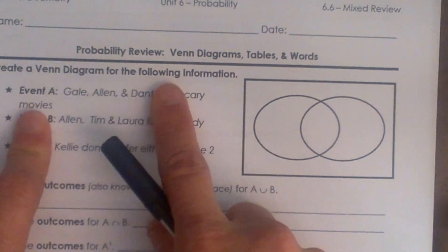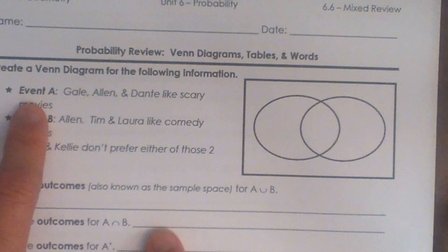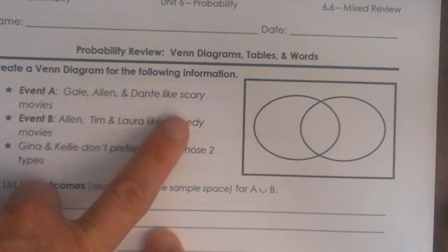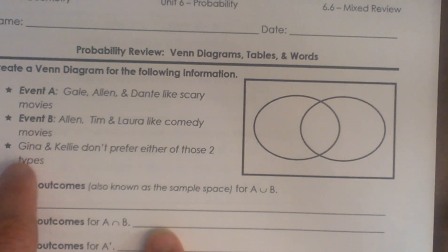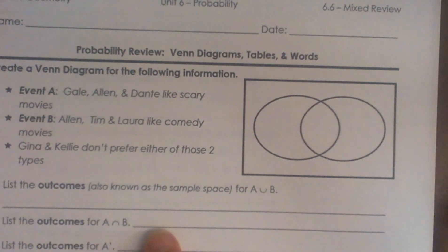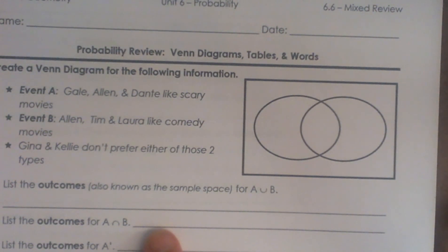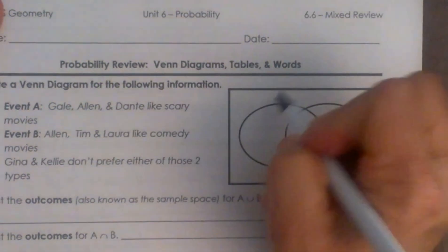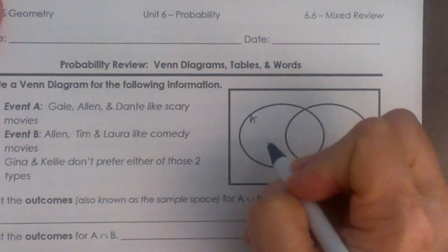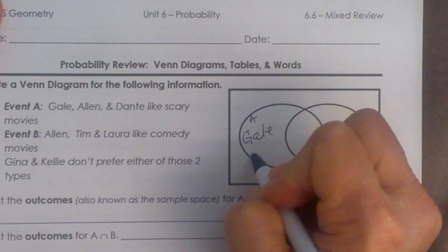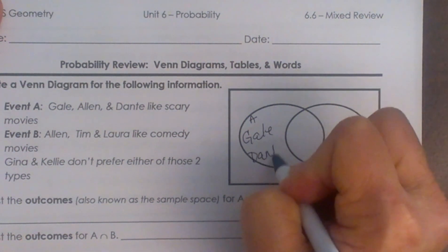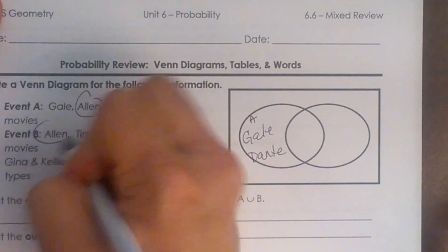Create a Venn diagram for the following information. Event A: Gail, Alan, and Dante like scary movies. Alan, Tim, and Laura like comedies. Gina and Kelly don't prefer either of these two types — maybe they like love stories. So we're going to call this Event A, and in here we have Gail and Dante. But notice Alan is in both groups.